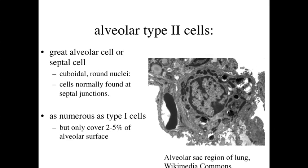Occasionally you'll see cuboidal cells — these are type 2 alveolar cells, also called septal cells or great alveolar cells. They have rounder nuclei and are found at septal junctions, at the boundaries of the walls rather than throughout the type 1 region. It's estimated that type 2 cells are as numerous as type 1 cells, but since type 1 cells are flattened they take up a lot of surface area, while type 2 cells are cuboidal and only occupy about 2 to 5% of the alveolar surface.